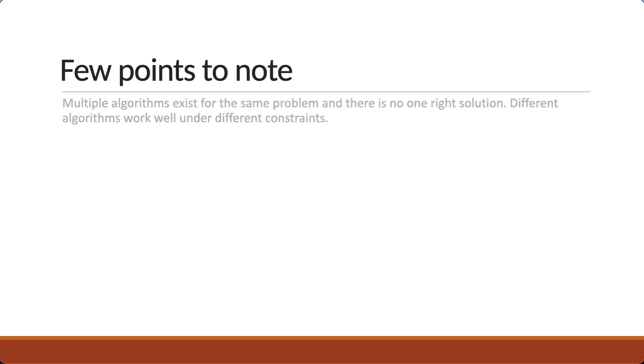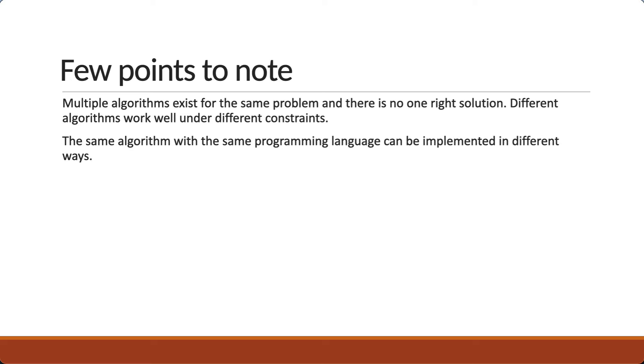The first point is that multiple algorithms exist for the same problem and there is no one right solution. Different algorithms work well under different constraints. You should always understand the problem statement before determining which is better. The second point is that the same algorithm with the same programming language can be implemented in different ways. We now have modern JavaScript features we can use to simplify the code we write. So what we learn in this series might be slightly different to what is out there. It does not make it an incorrect solution.